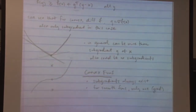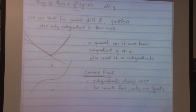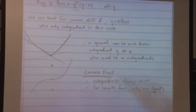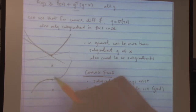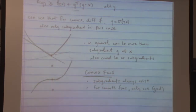For convex functions, subgradients always exist everywhere. For smooth convex functions, there's only one subgradient and that's the gradient. For non-convex functions, even smooth ones, we may not have any subgradients at some points. The notion of a subgradient is general and doesn't only apply to convex functions.